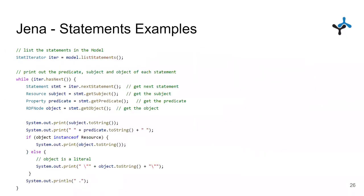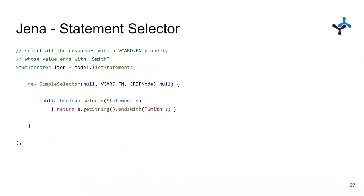In the model we can iterate using a StmtIterator. From each statement we can get the subject, predicate, and object and print those out. There is also a slightly different way of filtering statements: we call listStatements() with a selector object. The selector works intuitively — null means anything, so for the predicate we use vCard full name and for subject and object we can use null. The select method can also be overridden to provide custom filtering conditions.